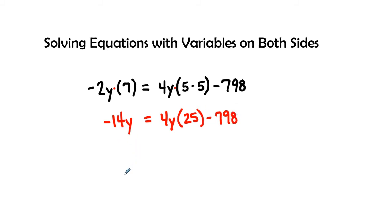So we're going to get rid of the parentheses on the right side. When I got rid of the parentheses on the left side, I could have done this all in the exact same step. So negative 14y equals 4 times 25 is 100y, minus 798.